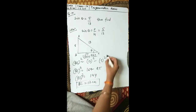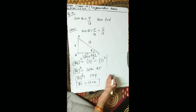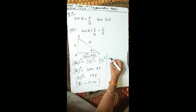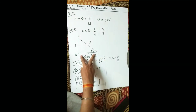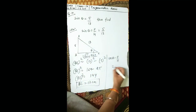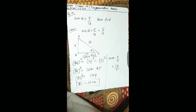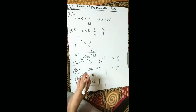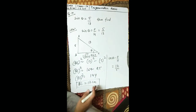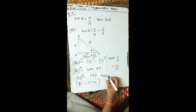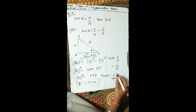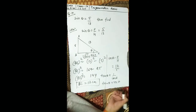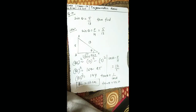Now we can find all other ratios. Cos theta equals base upon hypotenuse equals 12 upon 13. Tan theta and cosec theta can also be found easily. For tan theta plus 1 upon cos theta: note that 1 upon cos theta equals sec theta, so you can substitute and evaluate directly. You can similarly complete questions 11 through 13.